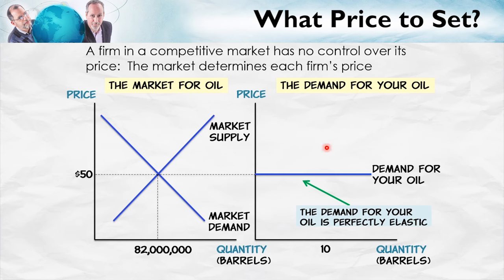What does perfectly elastic demand mean? Suppose that you try to sell your oil at a price above the market price — say $55 per barrel. Are you going to sell any oil? No! Not even your mother thinks that the oil from your well is so special that she would be willing to pay more for it. She can get oil which is identical or virtually identical at $50 per barrel, so she's unlikely to want to pay $55. And if your mother won't pay extra, then nobody will. So if you try to set a price higher than the market price, you're not going to sell any oil at all — zero. You can sell as much oil as you want below the market price, but why would you want to do that? Because, in fact, you can sell all the oil you want at the market price.